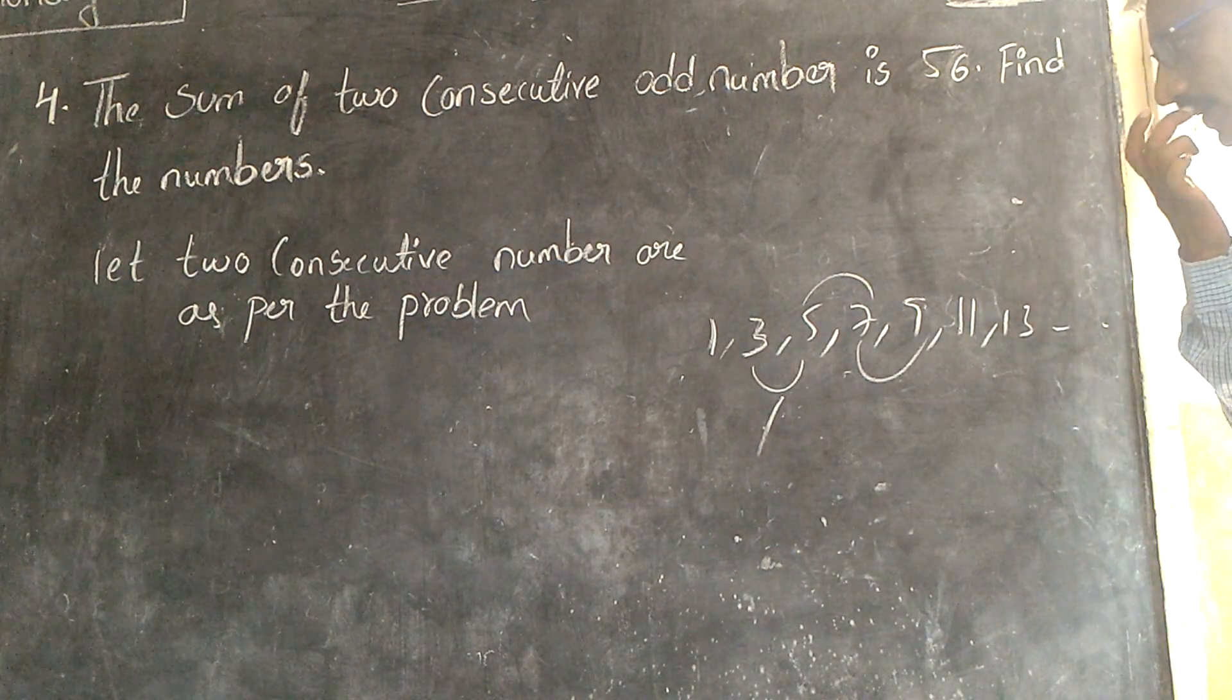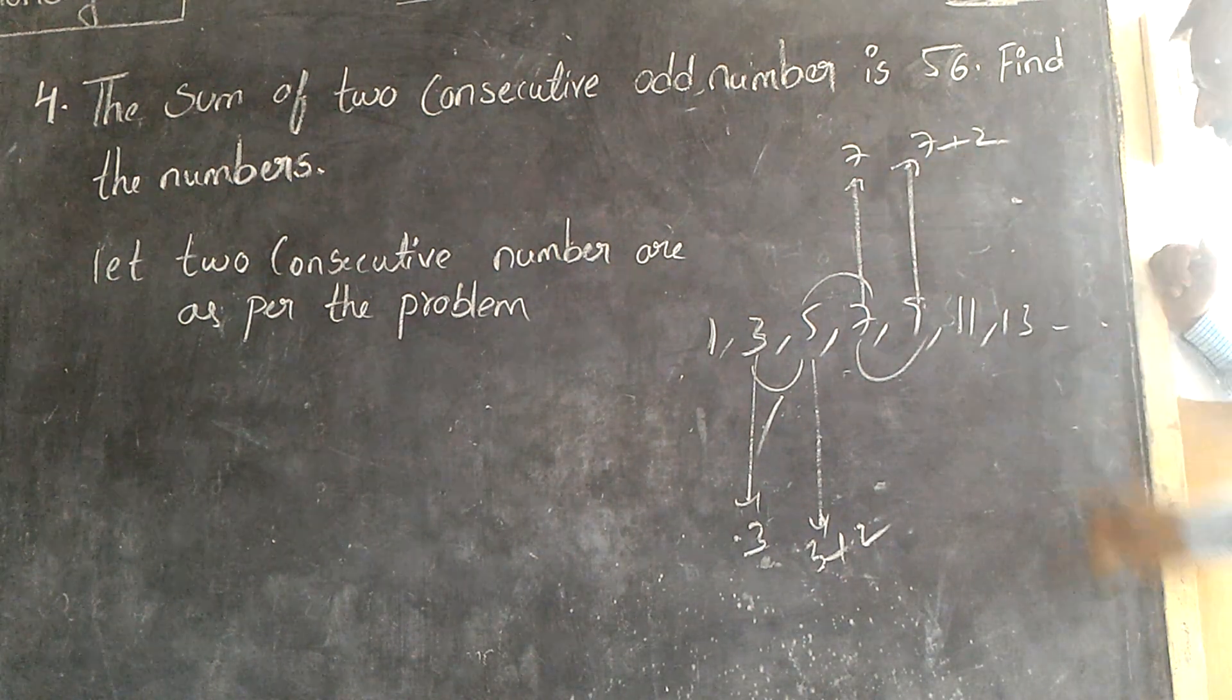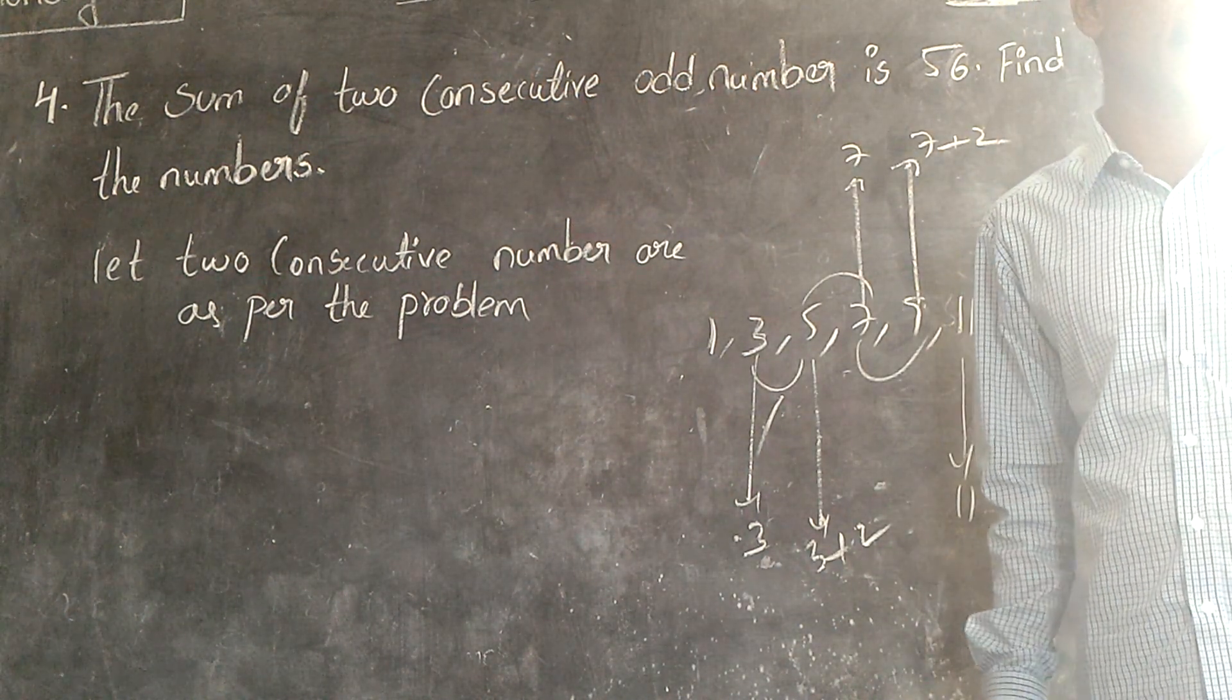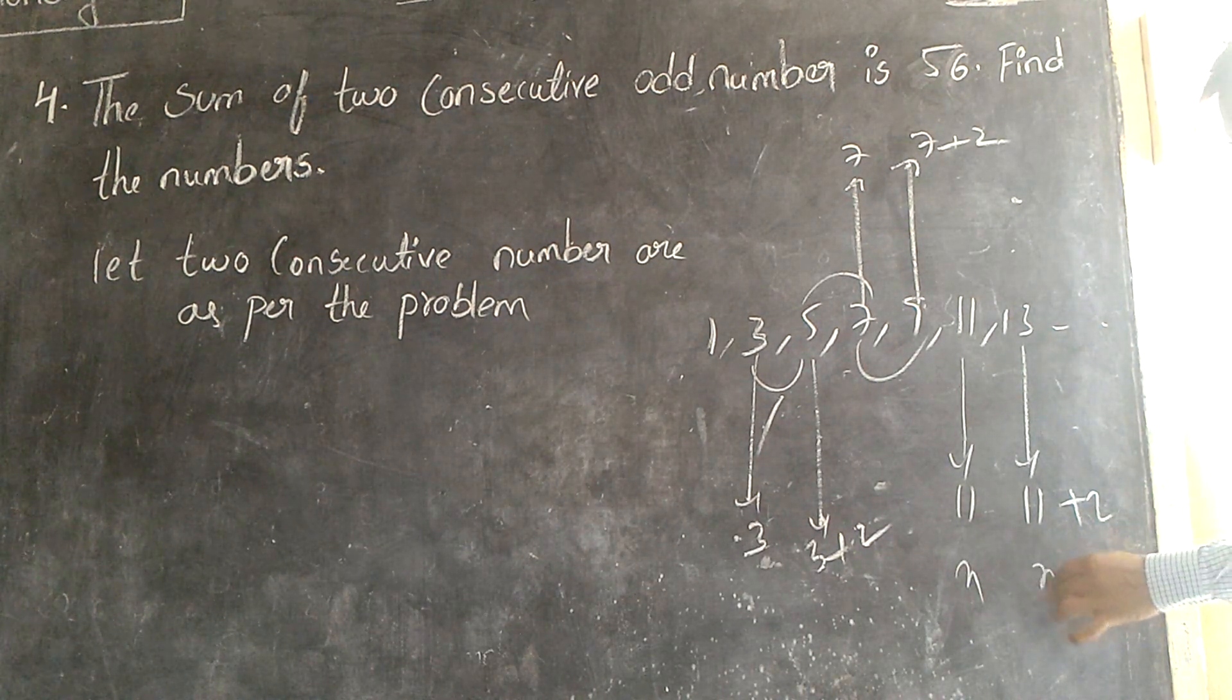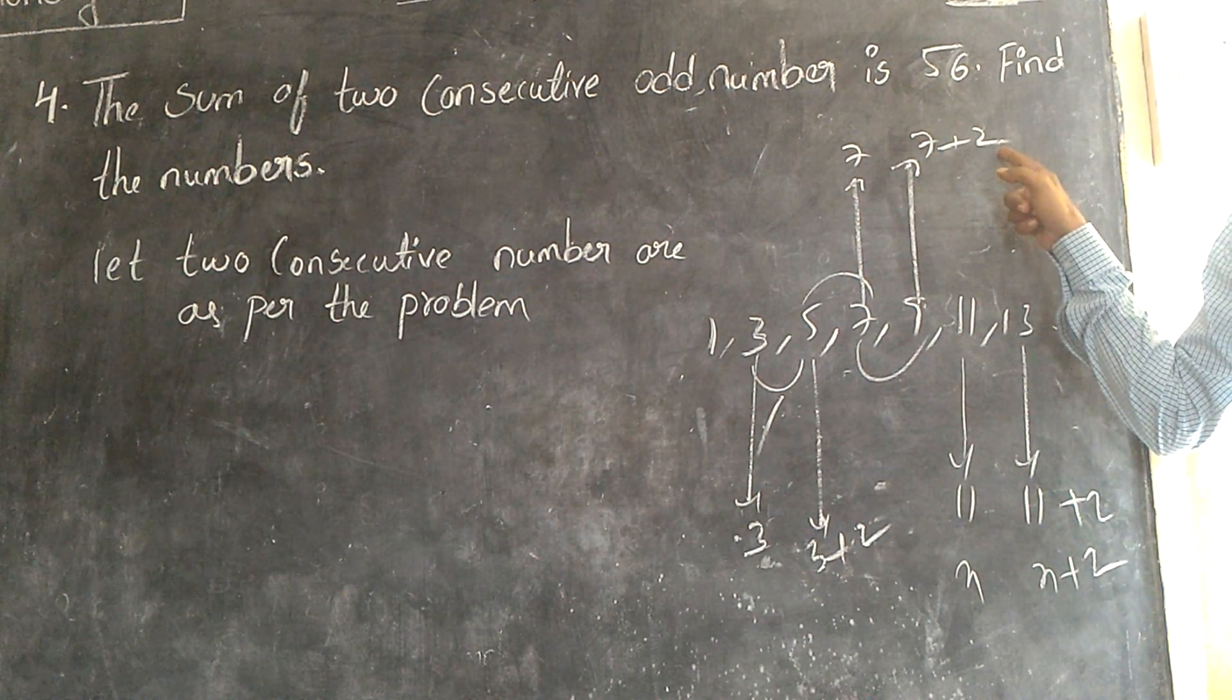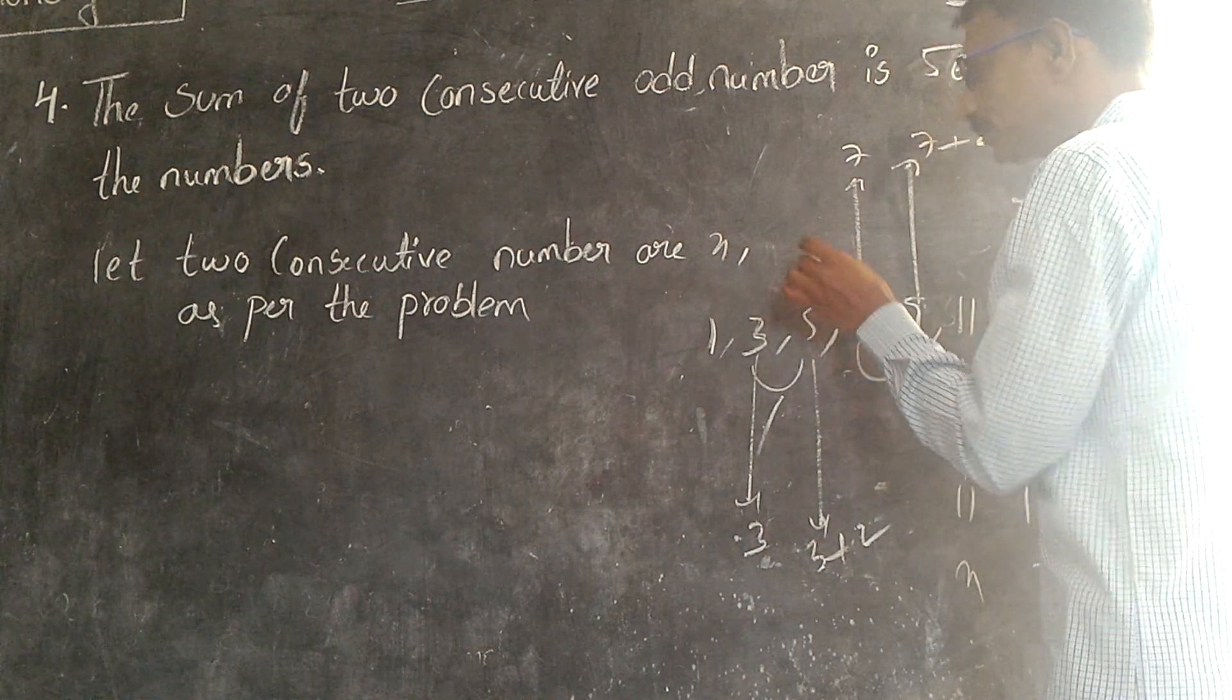Suppose this is three, can I write this is three plus two? Suppose this is seven, can we write this is seven plus two? This is eleven, we can write this is eleven plus two. But we don't know our consecutive numbers are here. We always take it as x. So suppose one is x, the second one must be x plus two. Why we take x plus two and x? We don't know those numbers. So therefore let two consecutive numbers are x comma x plus two.